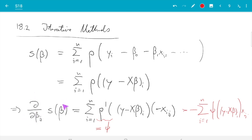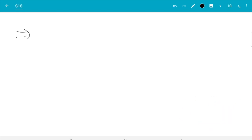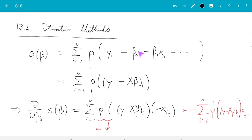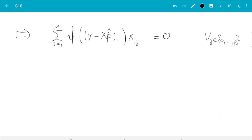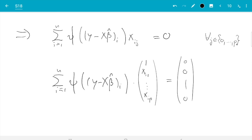If we plug in beta hat instead of beta, that thing must be zero. What we get is sum i from 1 to n psi of y minus x beta hat i's component x i j equals zero for all j from zero up to p. I did not do a special case for this. For that to be true also for beta zero, we need to set x i zero equal to 1. That's the system of p plus 1 equations. I can write that in the form sum i from 1 to n psi of y minus x beta hat i's component times the whole vector 1 x i 1 up to x i p equals the zero vector in r p plus 1.